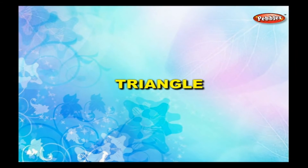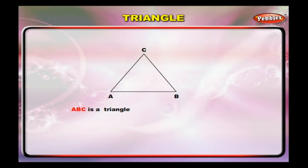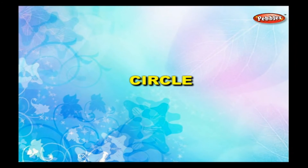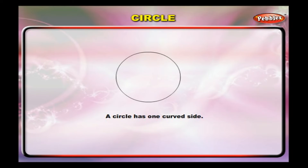Triangle. ABC is a triangle. It has three sides: AB, BC, and AC. It has three vertices: A, B, and C. Circle. A circle has one curved side and no corners.